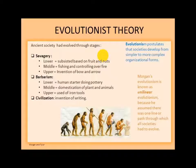He subdivided both savagery and barbarism into three sub-stages: lower, middle, and upper. According to Morgan's scheme, the earliest humans lived in lower savagery from fruits and nuts. Middle savagery people started fishing and gaining control over fire. In upper savagery, people invented the bow and arrow. In lower barbarism, humans started making pottery. In middle barbarism, people domesticated plants and animals. And in upper barbarism, people discovered iron.